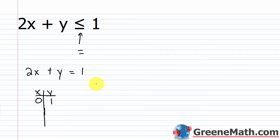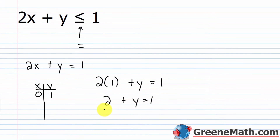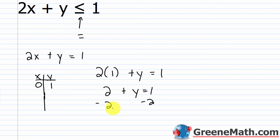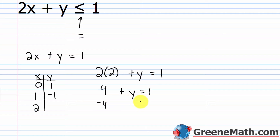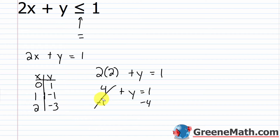With x equals 1: 2 times 1 plus y equals 1, so 2 plus y equals 1, subtract 2 from both sides, y equals negative 1. With x equals 2: 4 plus y equals 1, subtract 4 from each side, y equals negative 3. So I have three ordered pairs.